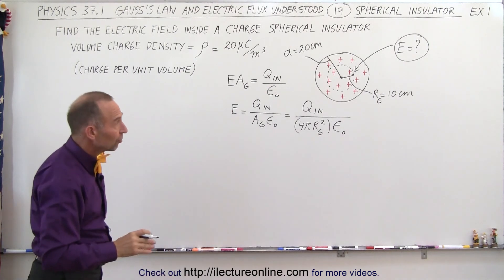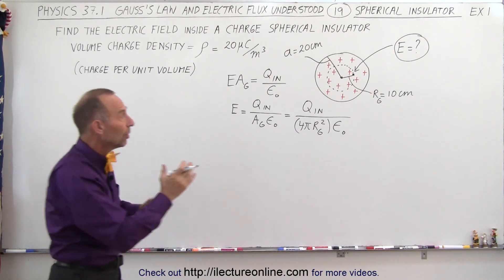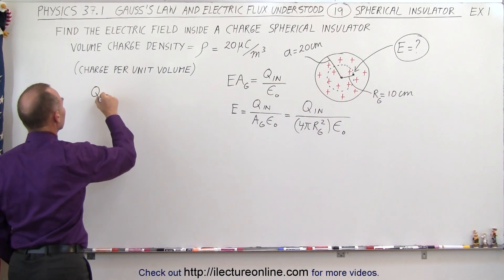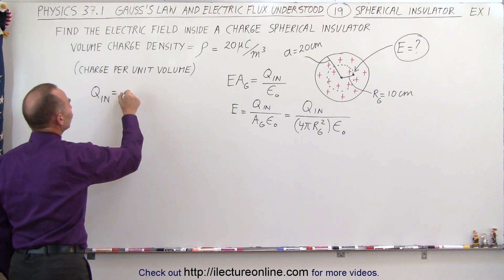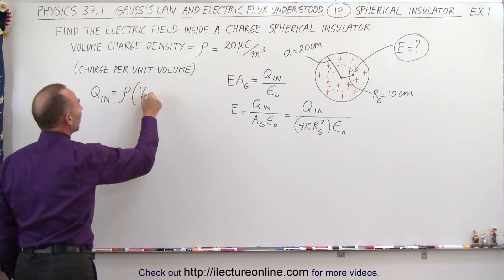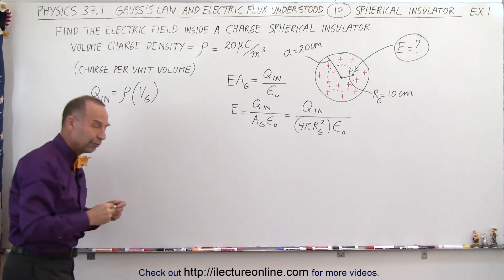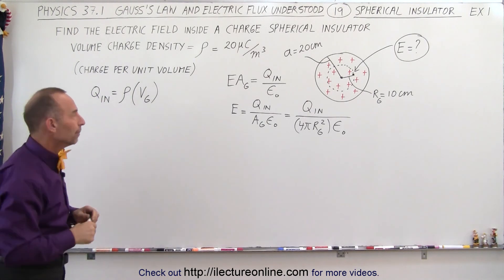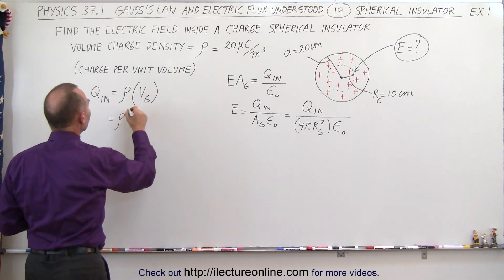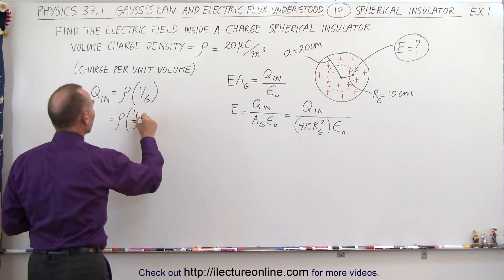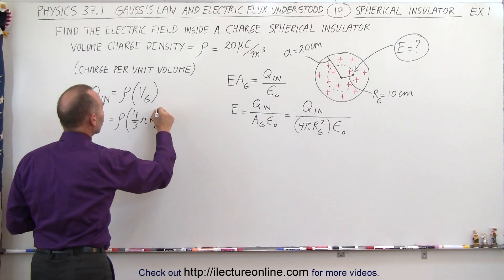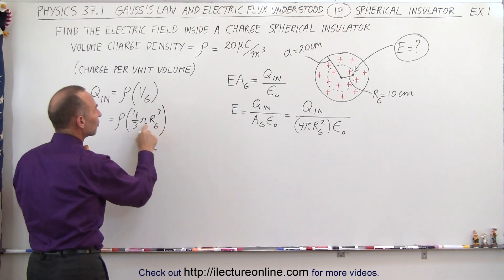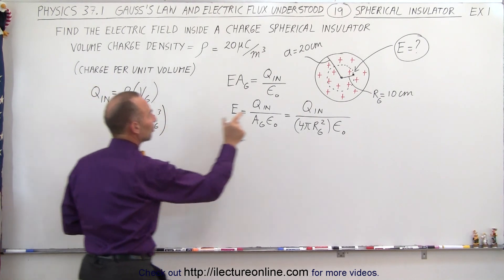Now, the key is to figure out how much charge is contained within that region. So we can say that Q inside is equal to the charge density times the volume of that Gaussian surface. To find the total charge within the Gaussian surface, you multiply the density times the volume. And so in this case, that's going to be equal to the density times 4/3 π R_G cubed. This is the equation for the volume of the sphere using the radius of the Gaussian surface.